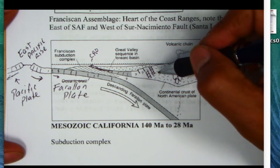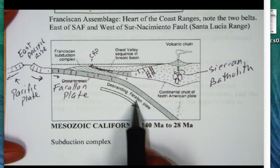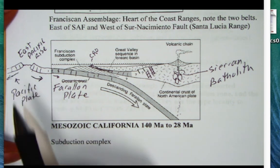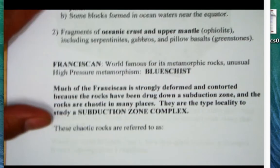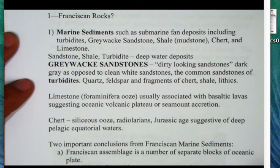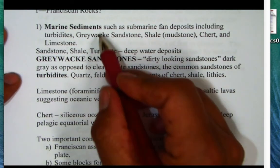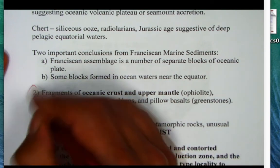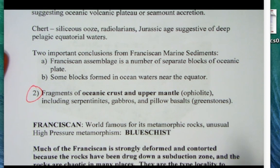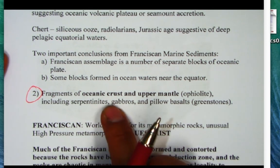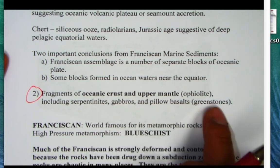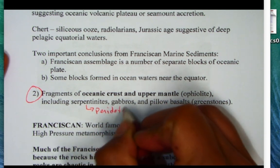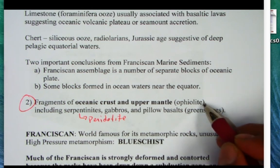All the accreted terranes accreted during Paleozoic and Mesozoic time. The Farallon Plate is subducting while the Pacific Plate is over here, not in contact. Later, when we develop the San Andreas Fault, we'll change this into a transform margin. The Franciscan rocks can be broken into two main groups: marine sediments, and fragments of oceanic crust and upper mantle — pillow lavas, basalts, gabbros, and serpentinites, whose protolith is peridotite representing mantle rock.